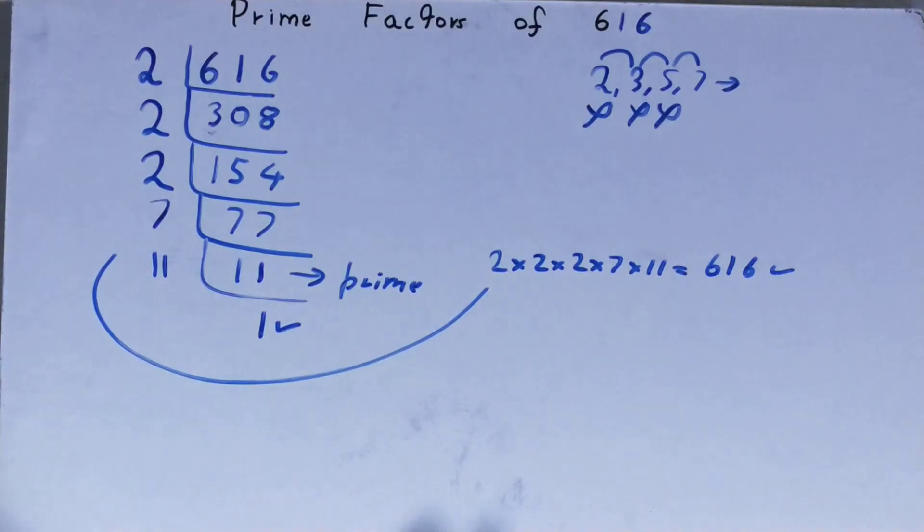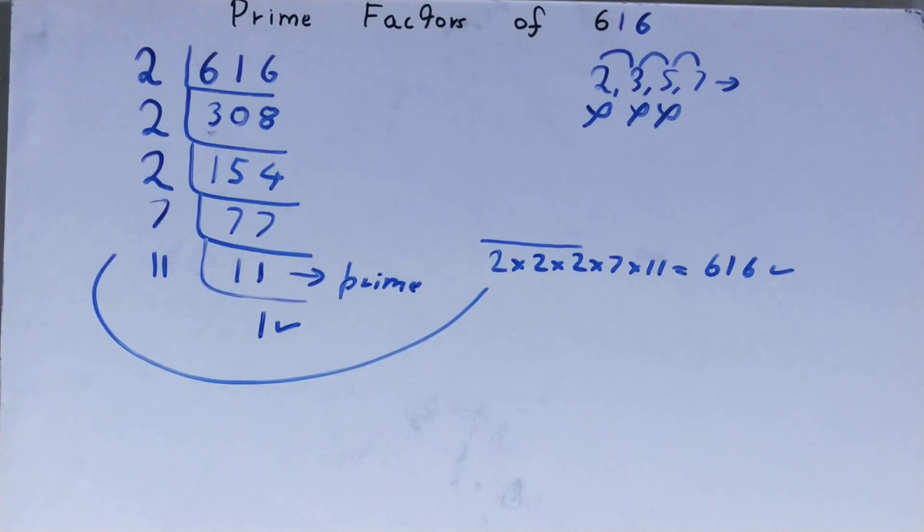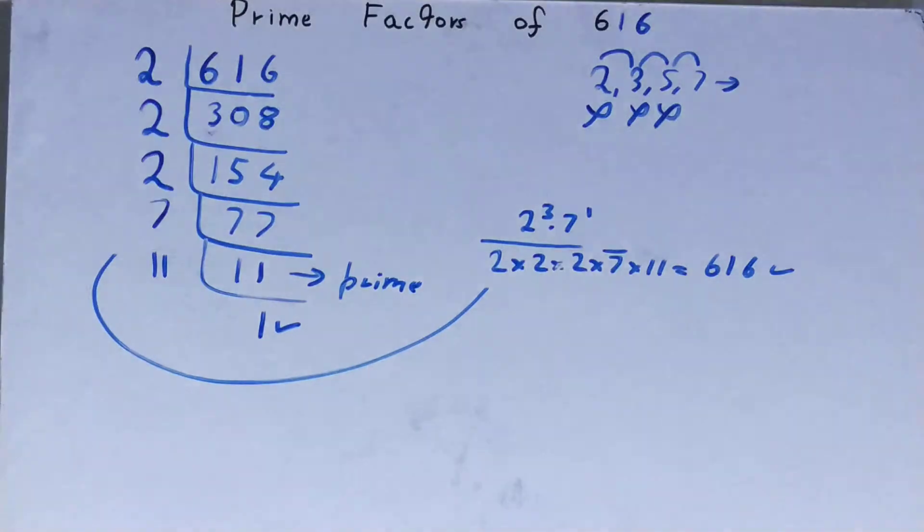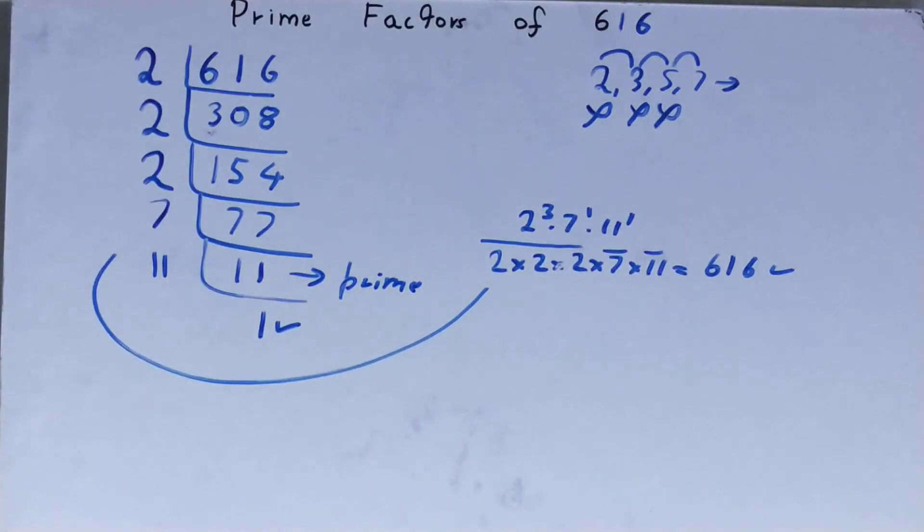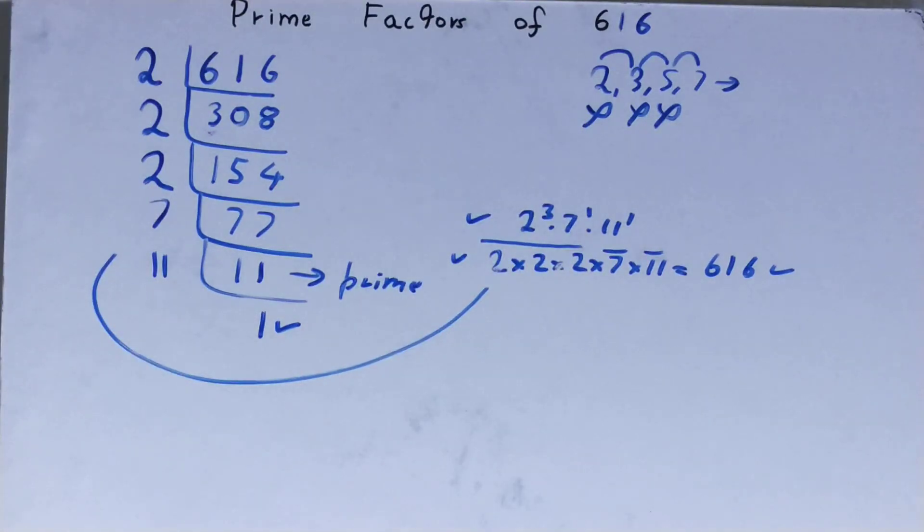You can also rewrite it in a different way. You have three times 2, so you can write it as 2 raised to power 3. You have one times 7, so you can write it as 7 raised to power 1. You have one times 11, so you can write it as 11 raised to power 1. You can write it this way or that way, it's up to you.